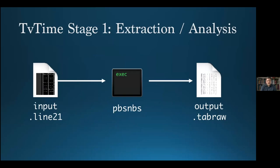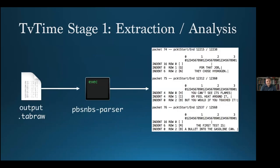The three-stage workflow generally remains the same, with extraction and analysis still beginning with the data extractor turning a Line 21 file into a Tab Raw file. However, as we began working with the TV Time system's data, it became clear that there was a need for an additional tool at this stage. This tool is called a parser, which performs a simple yet vital function: it simulates how a TV Time decoder would have interpreted the bit stream so that you can discern if there are syntax and grammatical errors.